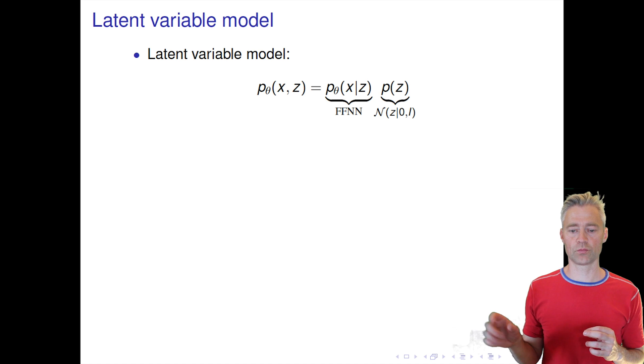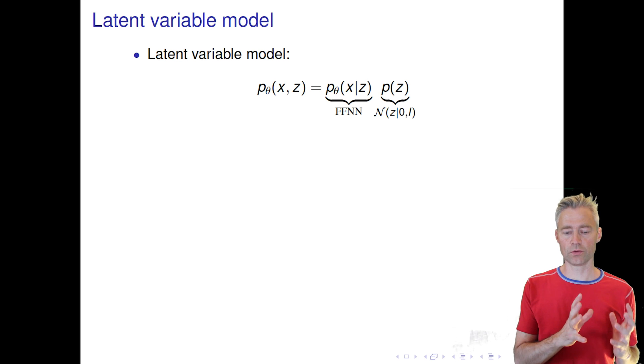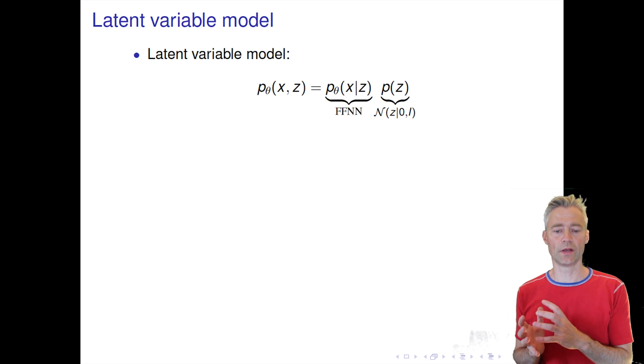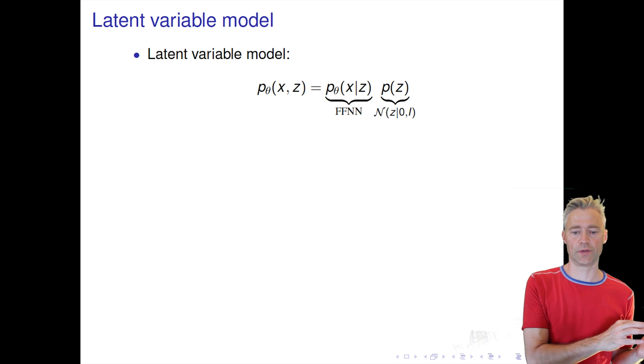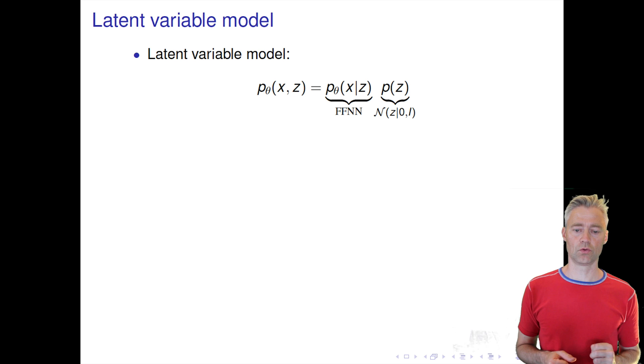We simply take it to be a normal distribution where we have no covariance between the different components of the latent variables. And all the action happens in the mapping from the latent space to the observed space. That mapping will be represented with a stochastic neural network model.